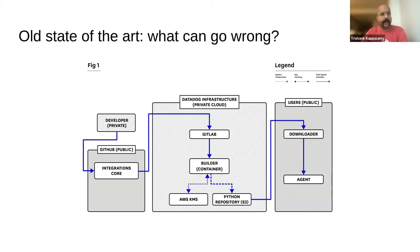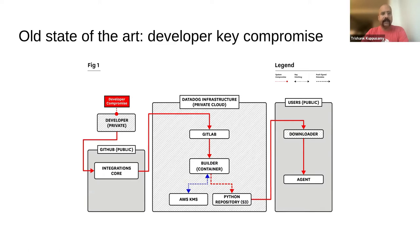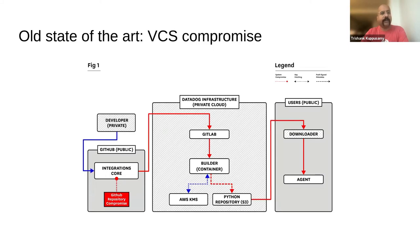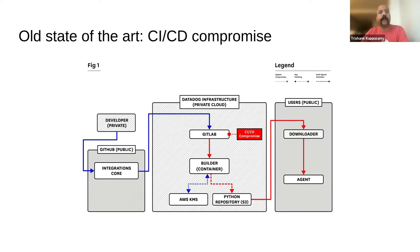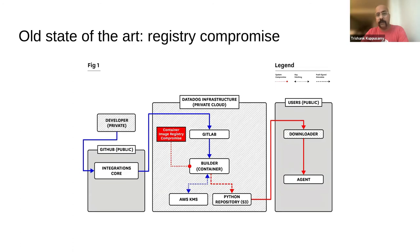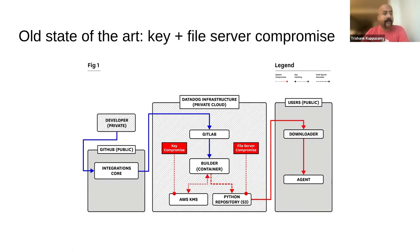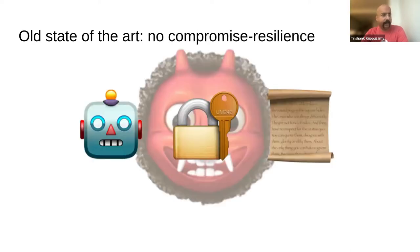99.999% of the time, nothing can go wrong — everything is good. But the problem is that a million little different things can go wrong. For example, your developer could have a key compromise, your VCS could get compromised, your CI/CD itself could get compromised, the image registry, or the key and file service you use to store your artifacts and signing keys. The point is there's no compromise resilience. One single attack and the whole game is over. It's an all-or-nothing proposition.